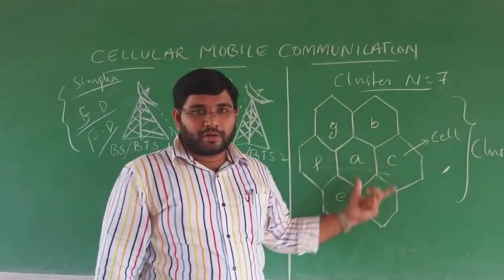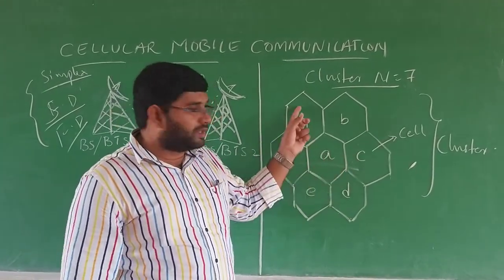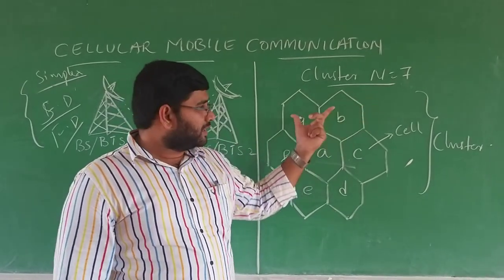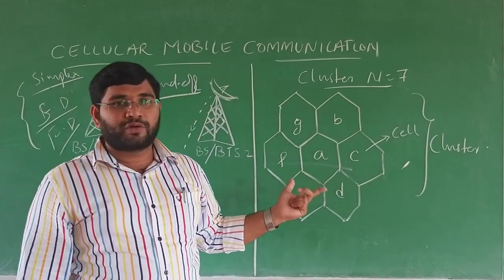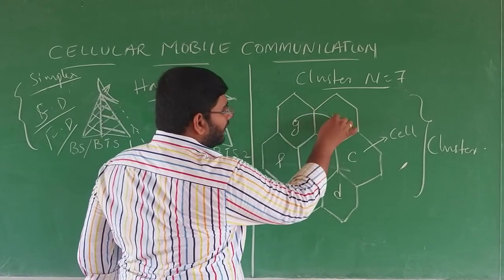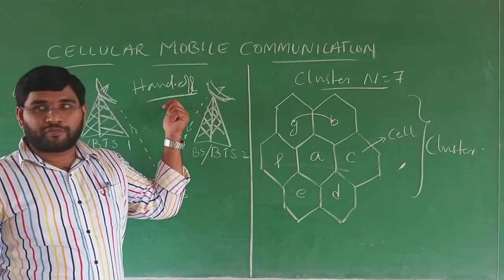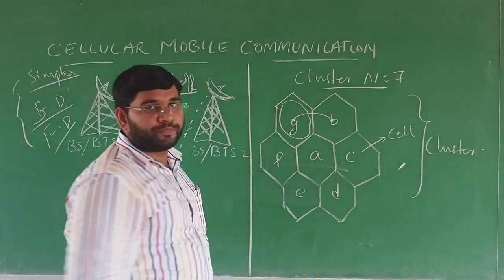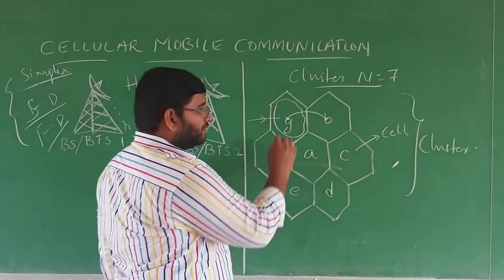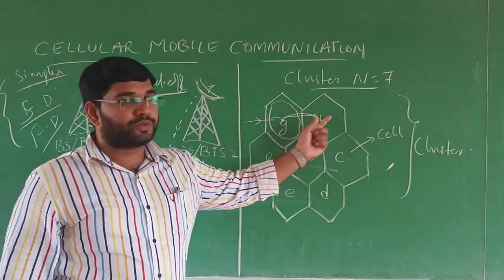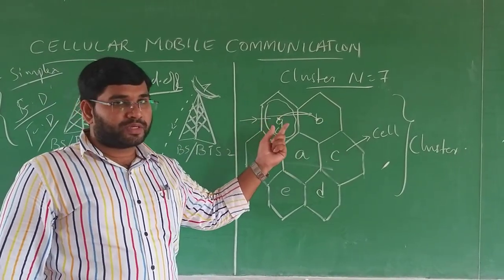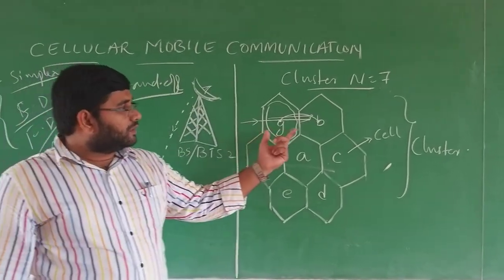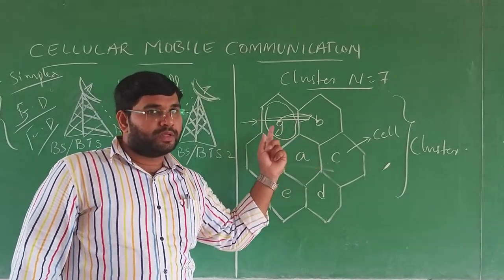In the diagram you can see seven hexagonal shaped cells. One part is called a cell, and a group of seven cells is called a cluster — so the cluster size is N equals seven. Information is transferred from one cell to another cell using the handoff process. Each cell has one BTS station covering the whole cell. When a person moves from one cell to another, their information is transferred from one BTS station to the next continuously.